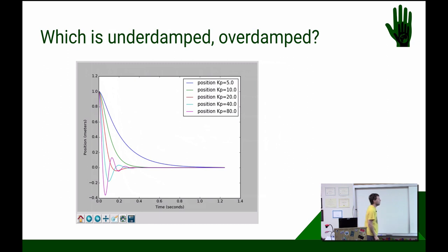OK, so let's look at this. Someone tell me, pick one of those that's underdamped. Yep, pink one's definitely underdamped. Blue one's still underdamped, yep. OK, can someone pick an overdamped one? Someone else? Dark blue. Yep, dark blue's definitely overdamped.